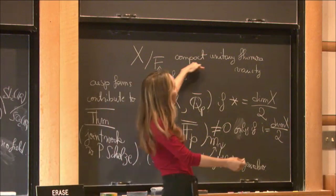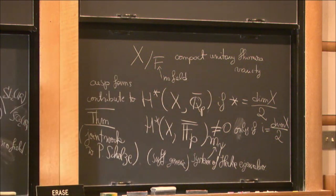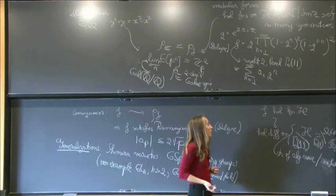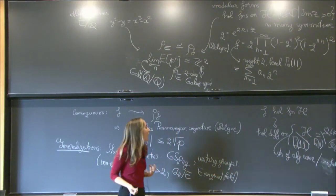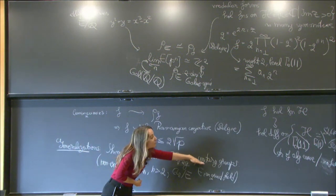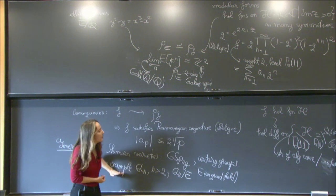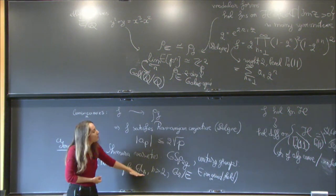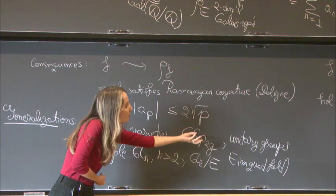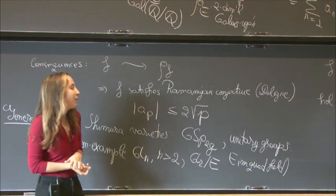This result currently deals with compact unitary Shimura varieties. One goal is to understand what happens in the non-compact case, because the boundaries of these unitary Shimura varieties are locally symmetric spaces for GL_n or GL₂ over E — spaces that don't have an algebraic structure. Understanding the non-compact case is an important future direction. Thank you.